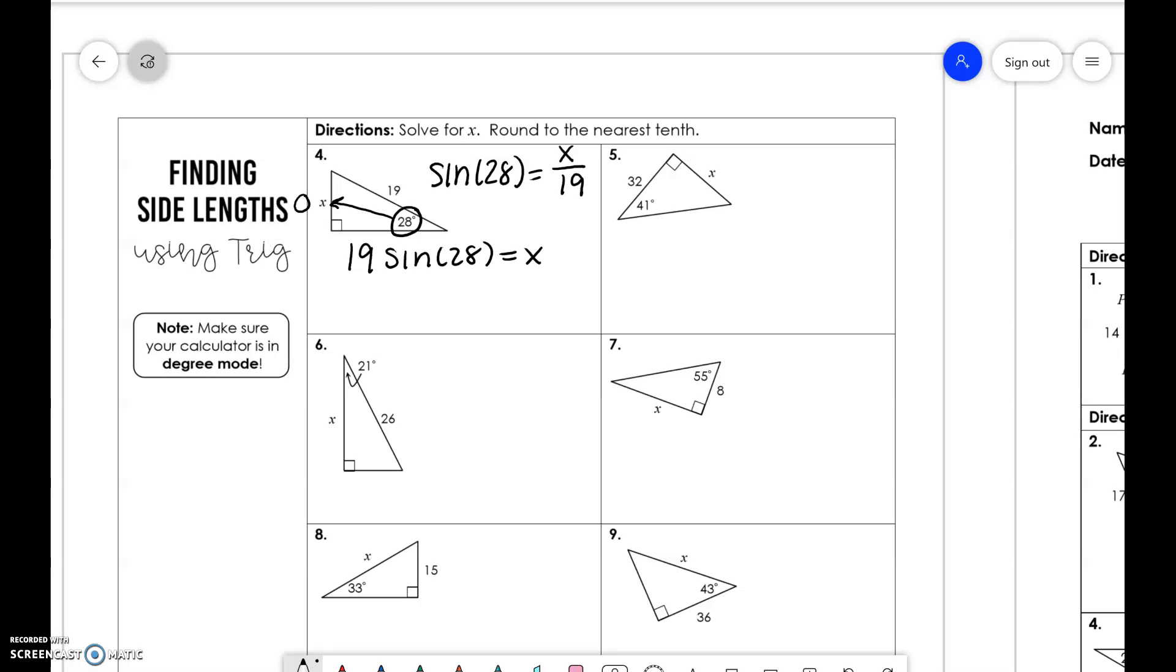When you plug this into your calculator, you're just going to do 19 times sine of 28. When you do this, you have to make sure that we are in degree mode in your calculator as well, so that when you plug it in, x is going to be 8.9. So if you got like 5.1, then you have your calculator in radians and it needs to be in degrees because when we plug it in here, this is a degree, it's not a radian.